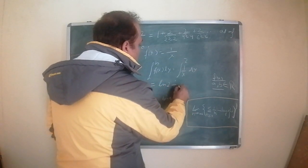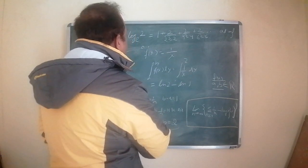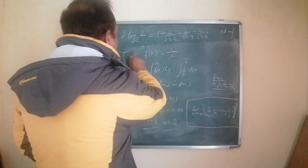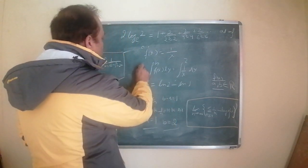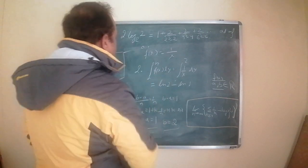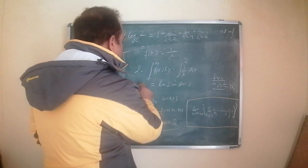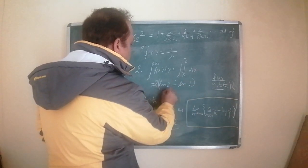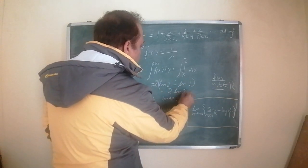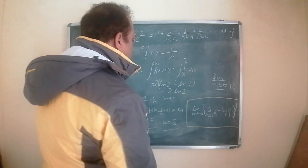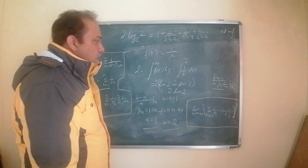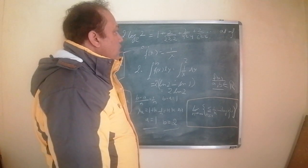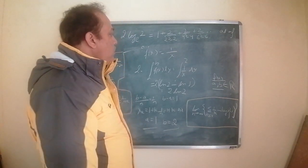The integral from 1 to 2 of 1 upon x dx equals natural log of 2 minus natural log of 1. We also have the factor of 2 on both sides, so this gives 2 times (natural log of 2 minus natural log of 1) which equals natural log of 2. So this is one proof of Ramanujan's second identity of the second chapter of the first notebook.